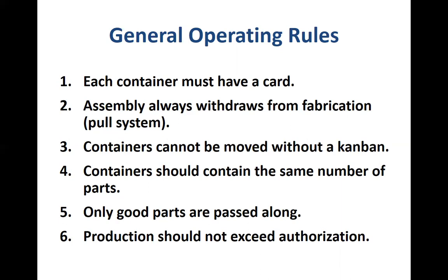The fourth operating rule is that containers should contain the same predetermined number of parts. The fifth is that only good parts are passed along — this ties back to the lean principle of quality at the source, where the worker must ensure that anything leaving their workstation is of good quality. Only good parts should move from one point to the next. The sixth rule is that production should not exceed authorization — you only produce what is needed by the next workstation, and no more.